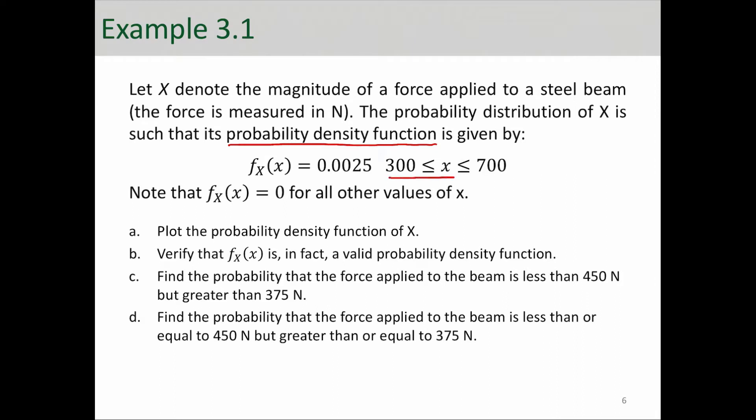The probability density function is equal to 0.0025 when X is between 300 and 700. So this tells us the range of this random variable. It's between 300 Newton to 700 Newton. And for any number between these two values, the probability is essentially the same, is 0.0025.